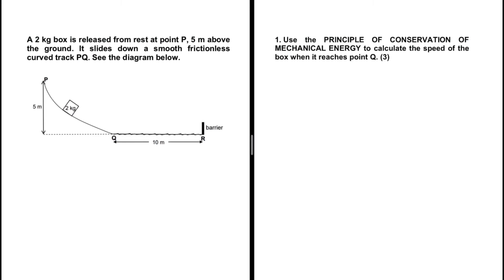Let's get more familiar with these theorems and principles. A 2kg box is released from rest at point P. As we can clearly see from our sketch, point P is 5 meters above the ground. The box then slides down a smooth, frictionless curved track PQ, as we can see in the diagram.